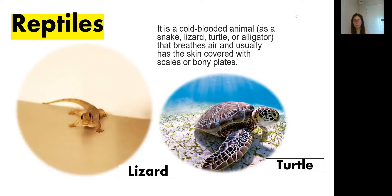Next is reptiles. Please say the word: reptiles. So a reptile is a cold-blooded animal such as a snake, lizard, turtle, or alligator. They breathe air and usually have skin covered with scales or bony plates. Again, reptiles have skin covered with scales or bony plates. Look at the skin of the two animals on the screen. The first example is lizard, and the second one is turtle.